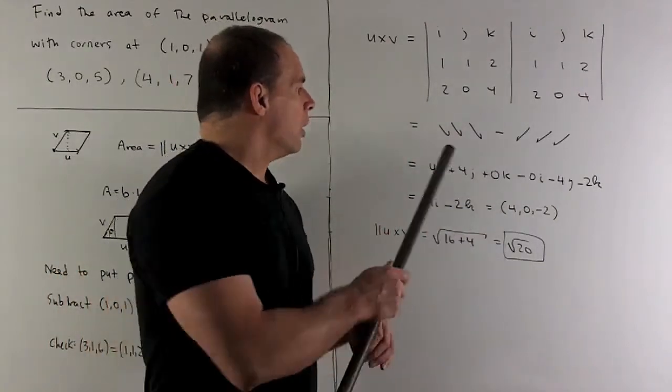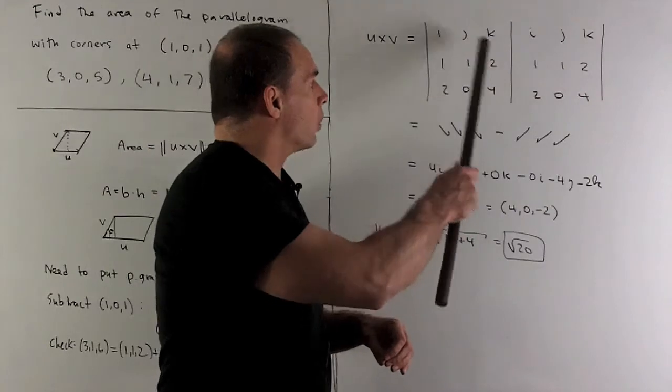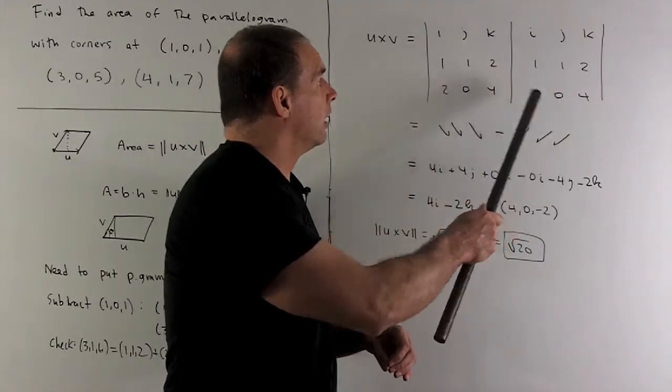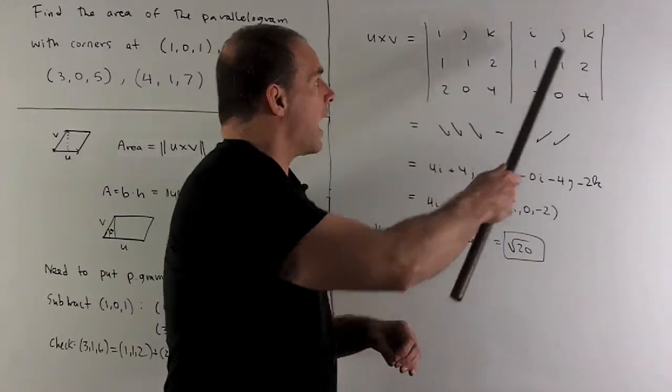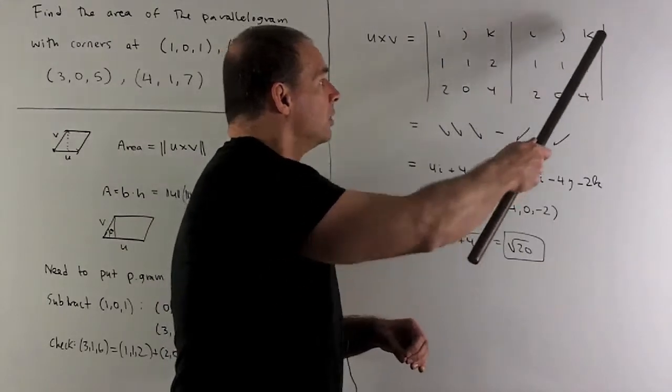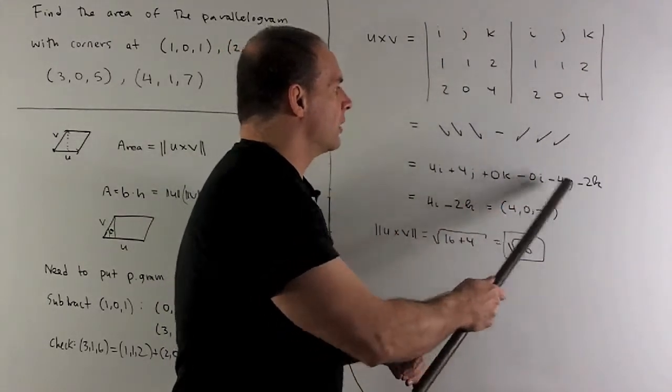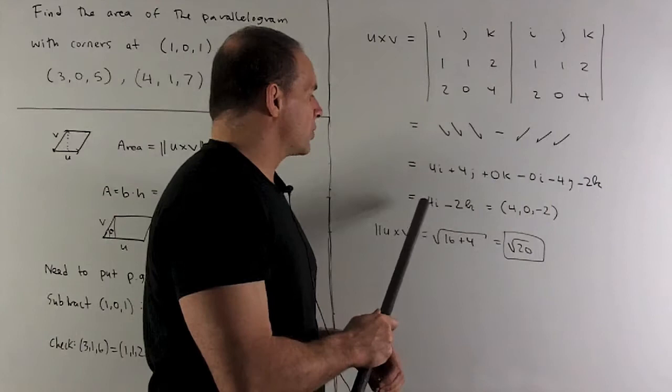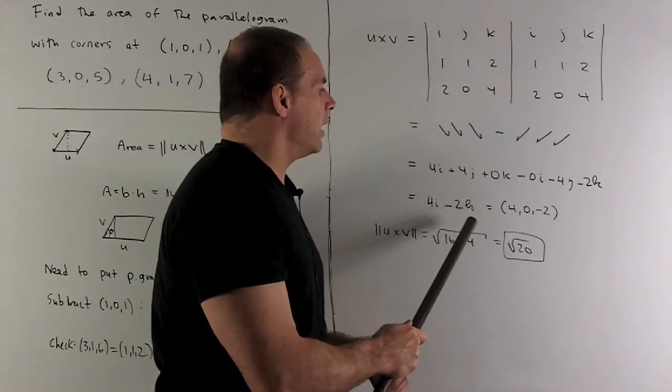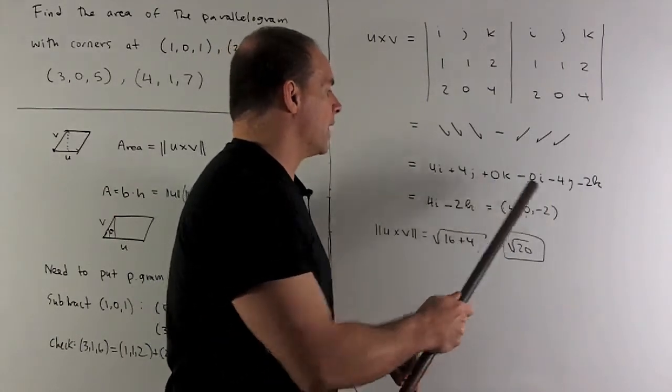So, when I do that, what do we get? We get 4i, 4j, 0k. Coming back, I'll have 0i, 4j, 2k. And we put minus signs on these. So, you'll note what survives is going to be 4i minus 2k, or the vector 4, 0, minus 2.